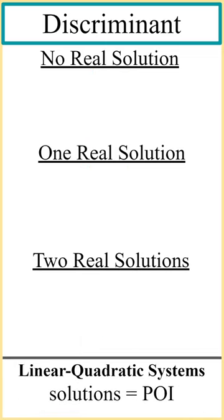For linear quadratic systems, the solutions are the points of intersection, which will look something like this.